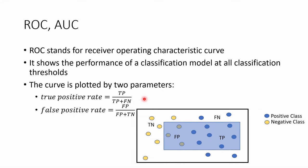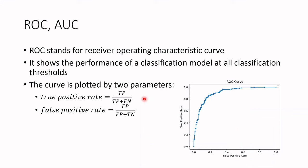If you search for an ROC curve online, you'd probably see something like this. On the horizontal x-axis is the false positive rate, and on the vertical y-axis we have the true positive rate. The best threshold performance would be at the point with a true positive rate of one and a false positive rate of zero — though that's very hard to achieve. Each dot represents a different threshold, and this helps us choose the best threshold to use for the model.